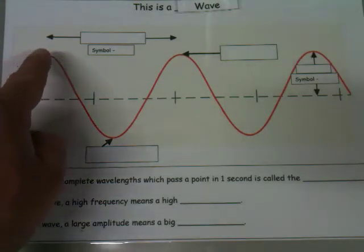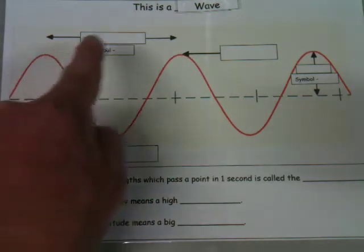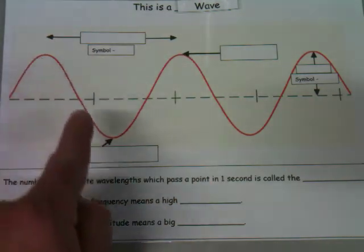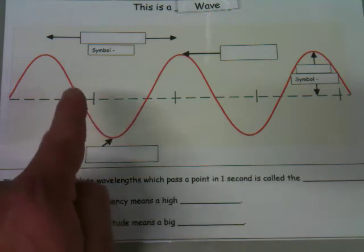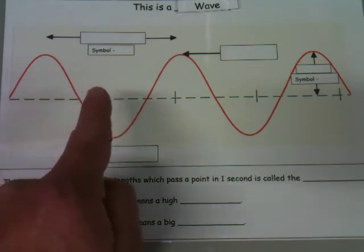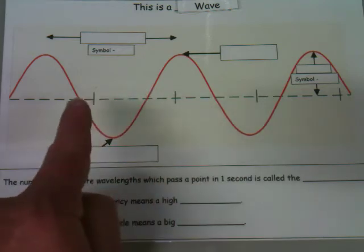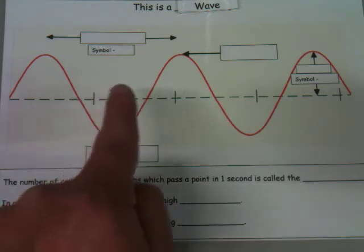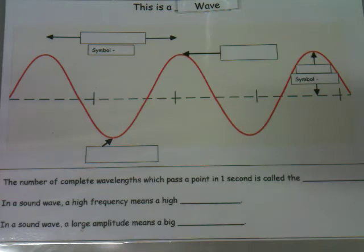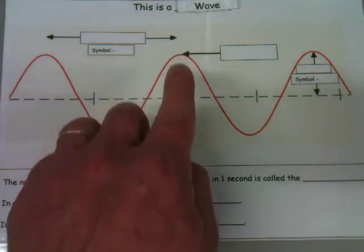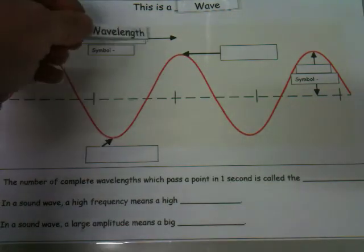The distance between two consecutive crests, the tops of the wave, or indeed two consecutive troughs or two consecutive centers—that will be from here to here. This is not—this is only half a wave. That is a full wave, so the distance between here and here is a wavelength.